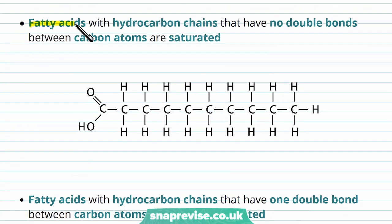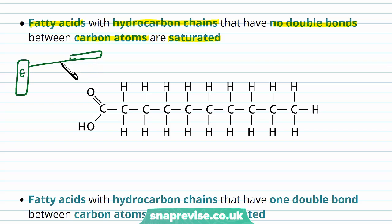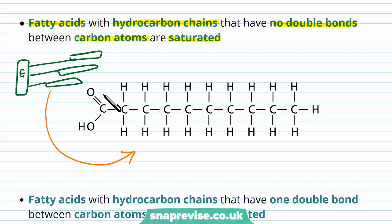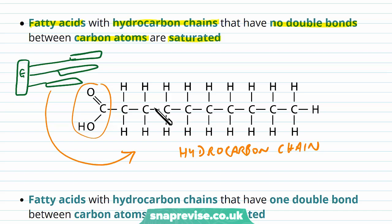The fatty acids in triglycerides have hydrocarbon chains. Those that have no double bonds between the carbon atoms are termed saturated. A triglyceride has glycerol and three fatty acids. Looking at one fatty acid, we have a carboxyl group at one end and then the rest is a hydrocarbon chain. All of the carbons are joined to the other carbons via single bonds — no double bonds — and we term this saturated. Every single carbon is joined to four other elements.